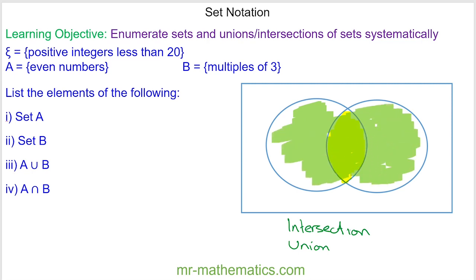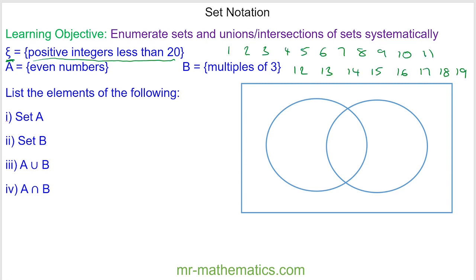Okay, so let's move on to completing our Venn diagram. Epsilon means the universal set and this includes all the positive integers less than 20. So these are the numbers from 1 to 19, and we're going to look at set A first. Set A has all the even numbers.